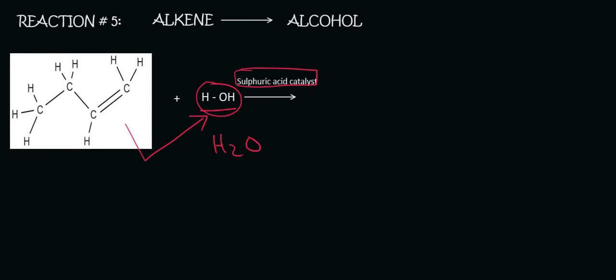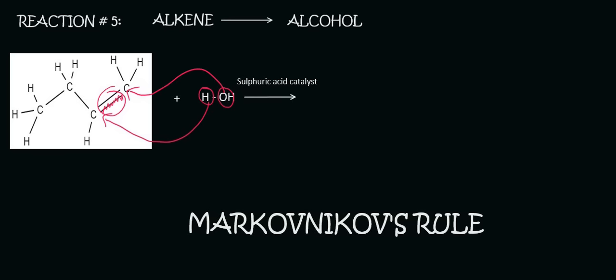Now here's something very important. How do we know where this H is going to go and where this OH is going to go? Obviously one of them is going to go there and then the other one will go there because that's where the double bond is. Because what you can then imagine is that that double bond can then break and those two can attach. But there's a specific rule that we need to follow and that's called Markovnikov's rule.